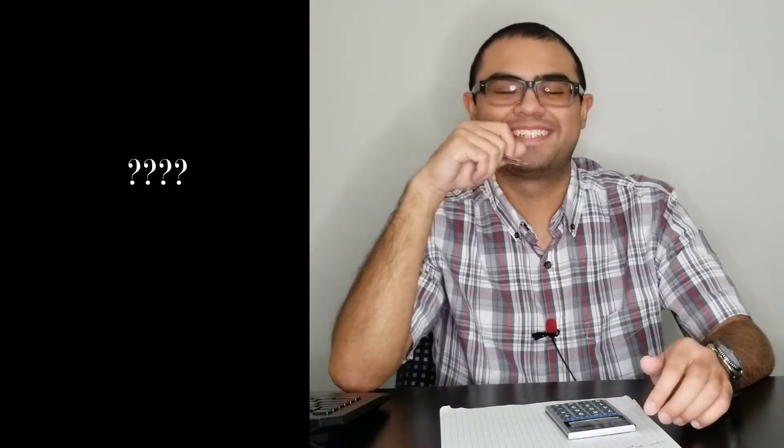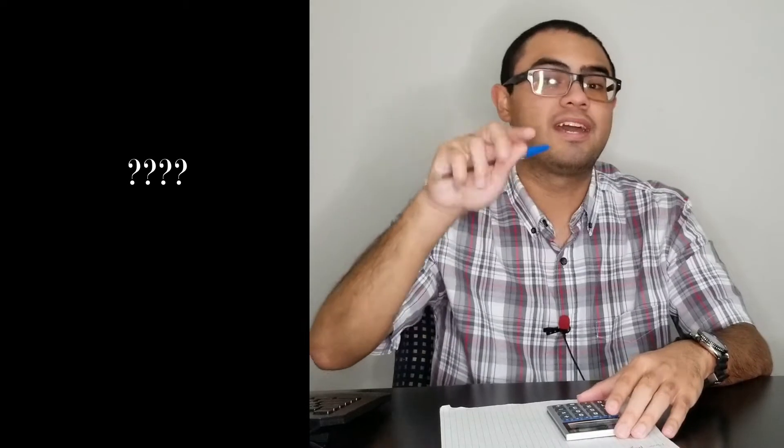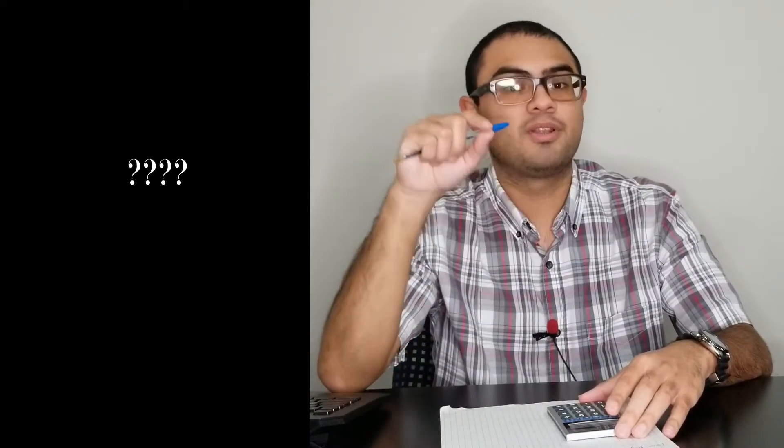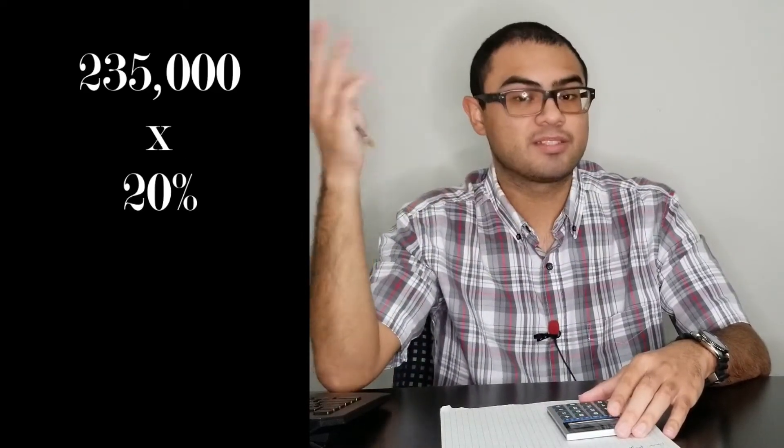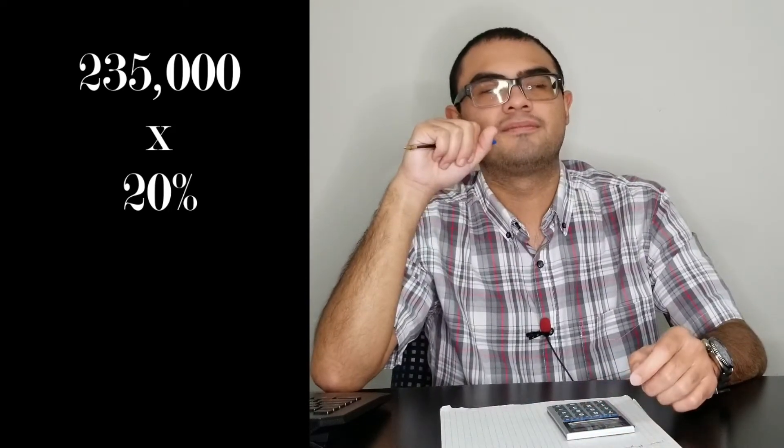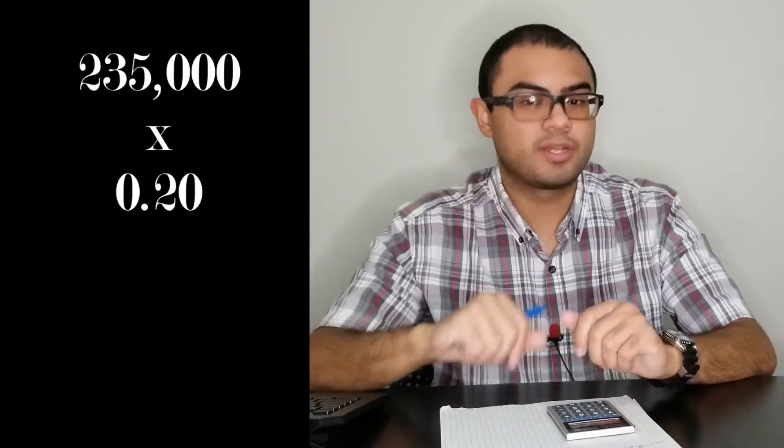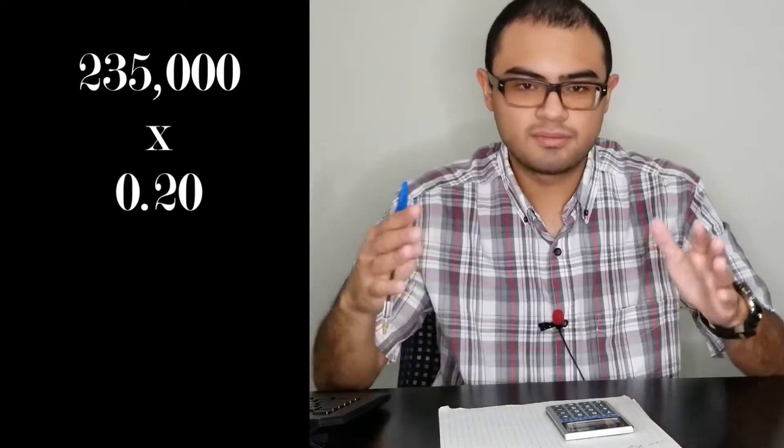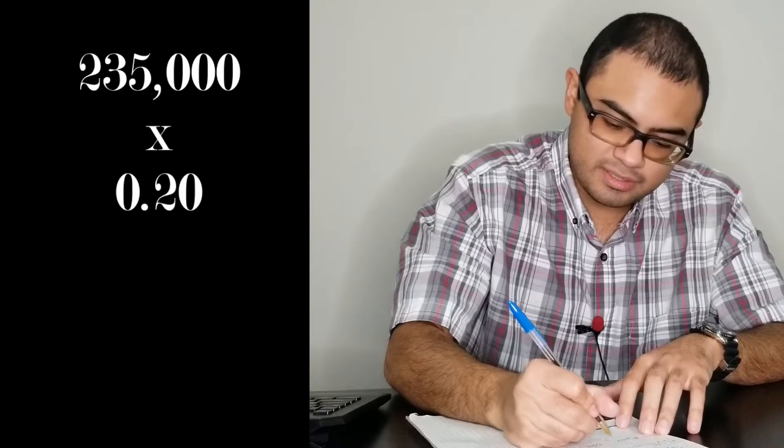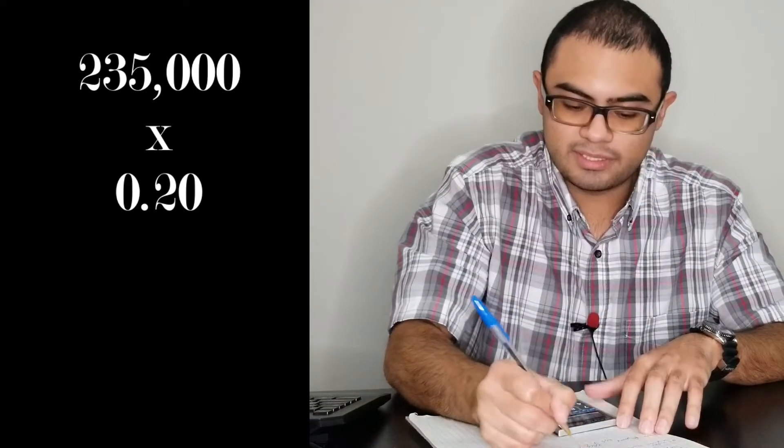You know how to do the math now. You got $235,000 purchase price, and you know it's 20% down. So what do I need to put in the calculator? You need to put $235,000 times—now remember before we did 0.035, that was 3.5%. Now we're doing 20, so you need to put 0.20 for 20%.